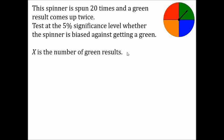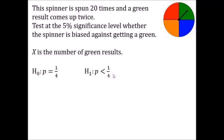The first thing we have to do is decide what our variable is. The random variable in this case, x, is the number of green results. Next we always have to write down what our hypotheses are. The null hypothesis is the default state — in this case we assume the spinner is fair, so p equals a quarter. The alternative hypothesis h1 is what we suspect might be the case: that the spinner is biased against green, i.e. the probability of getting green is lower than a quarter.